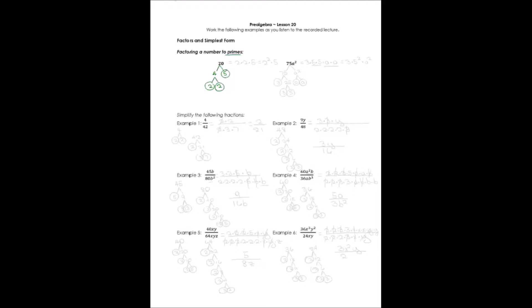The prime factorization of 20 is 2 times 2 times 5. I used each of my prime factors multiplied together. I could write that in exponential notation: 2 squared times 5. That's the prime factorization of 20.